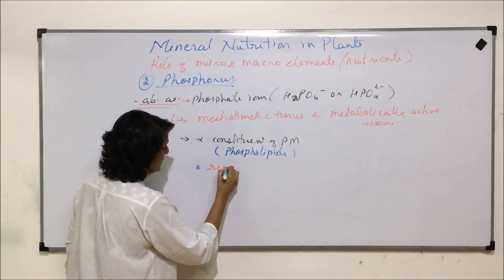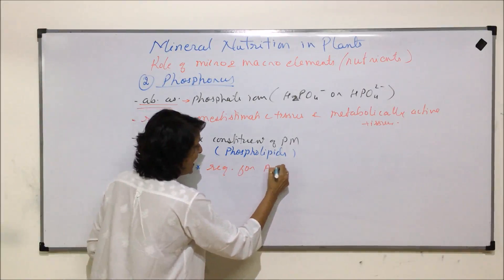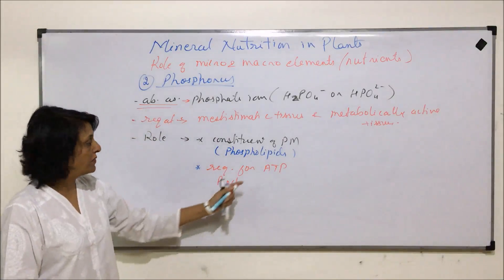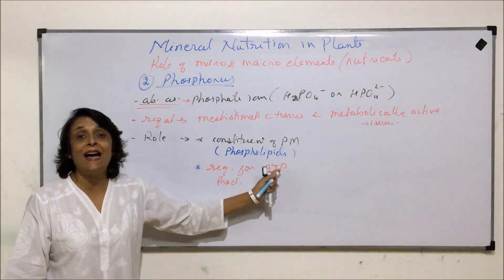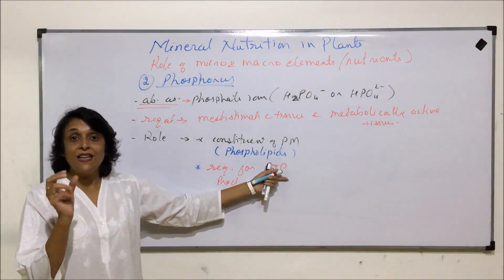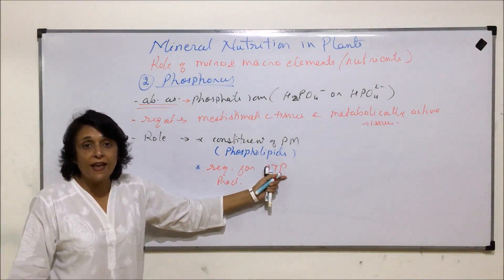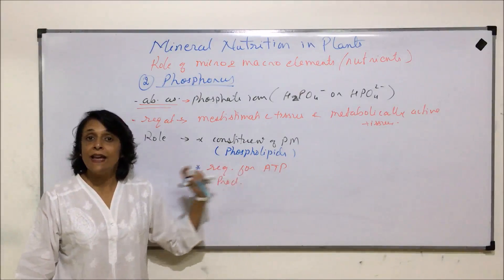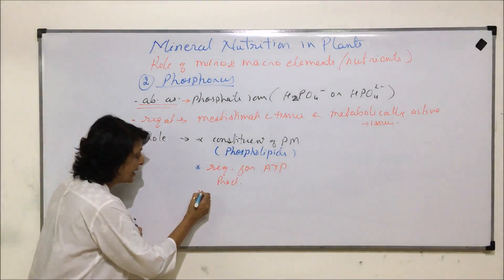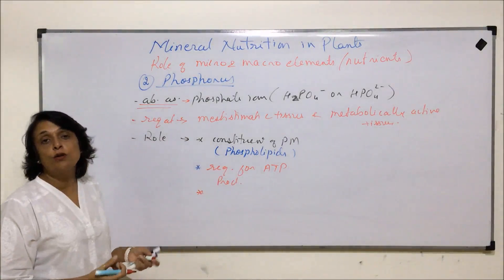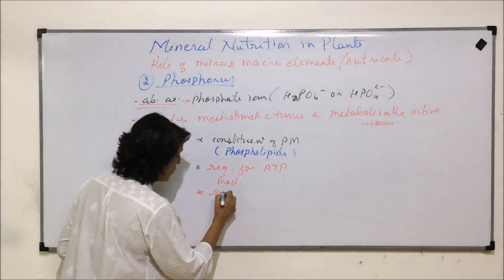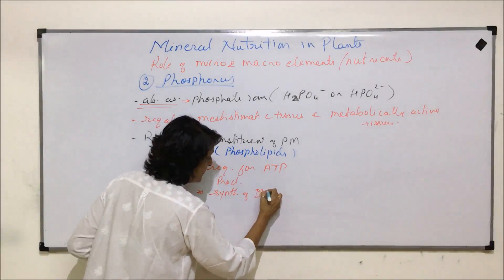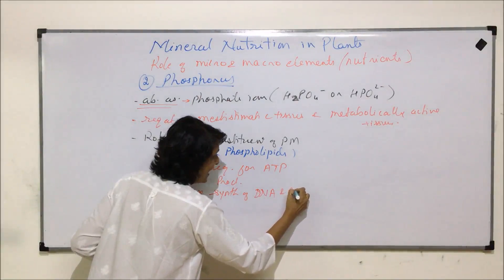The second important function is that phosphorus is required for ATP production. ATP is the energy currency of the cell — adenosine triphosphate — which has three phosphate groups. When the bonds between the phosphorus groups break, energy is released. Phosphorus is also required for the synthesis of nucleic acids, that is DNA and RNA.